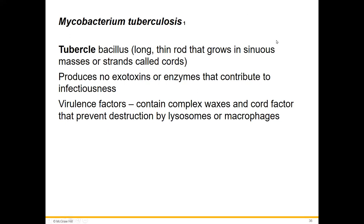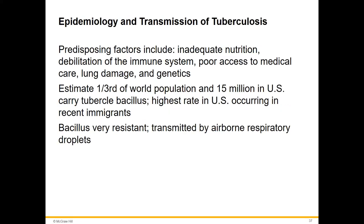Mycobacterium tuberculosis doesn't produce exotoxins or enzymes, but it has waxy cell wall components — it's so fatty that it can prevent being destroyed by lysozymes or macrophages. Even when phagocytosed, it often isn't destroyed by lysosomes and can live inside macrophages, contributing to that granuloma formation seen in the lungs. You can actually see macrophages with mycobacteria and fatty casts inside them after phagocytosis — a key virulence factor contributing to latent TB.